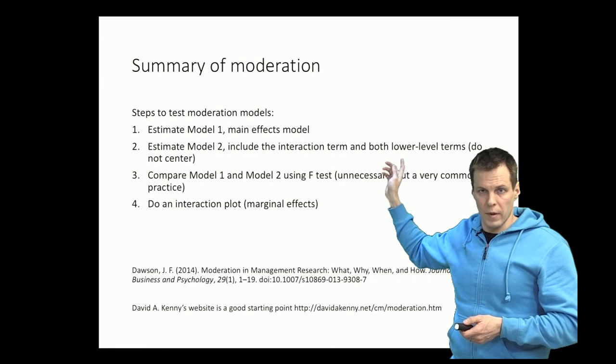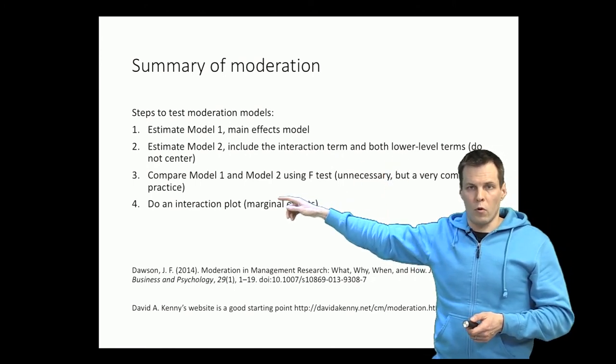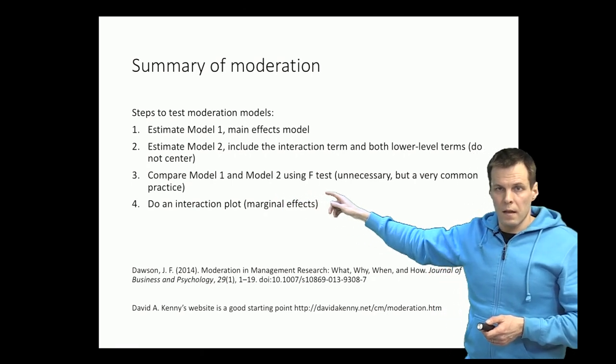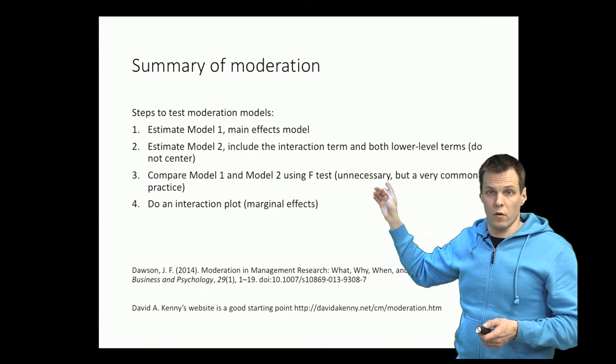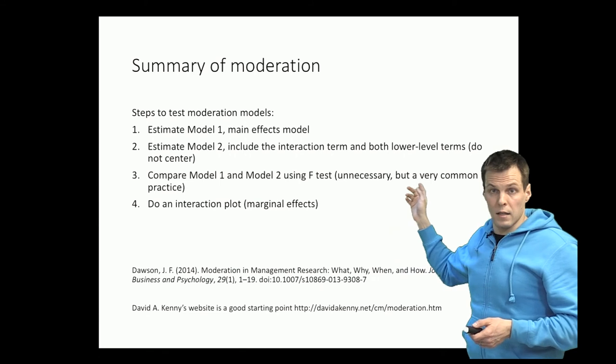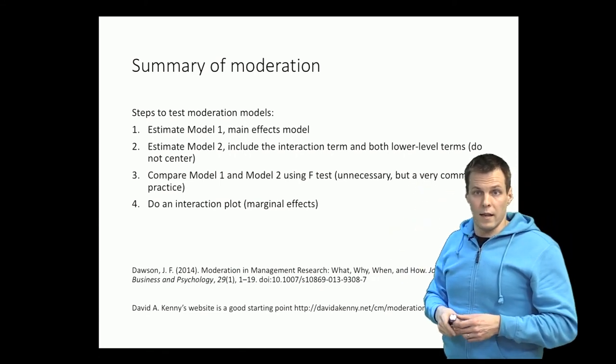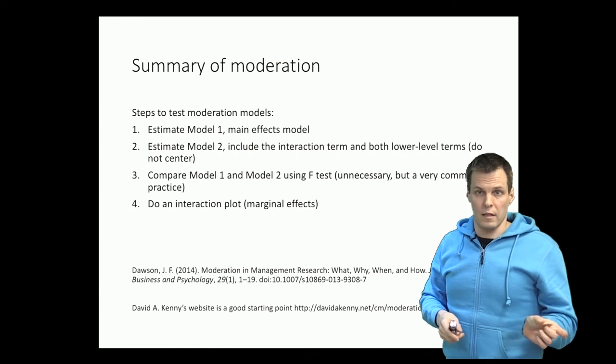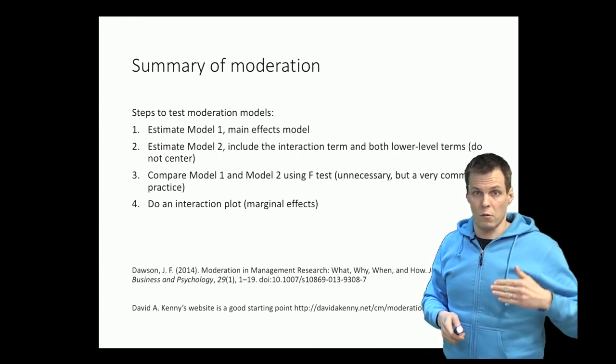Some people recommend that you center your variables before doing the interaction term. That's a bad idea. Don't center. I'll explain why in another video. Then you compare model 1 and model 2 using the F-test. This is actually not necessary because the significance test for the t-test for the interaction tells you the exact same thing, but it's a very common practice to do so. And it doesn't take much space to have the delta R-squared, the R-squared change, and the F-statistic in the regression table after the R-squared values.